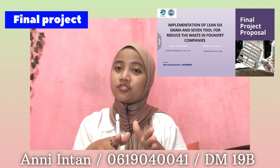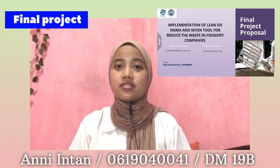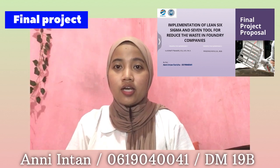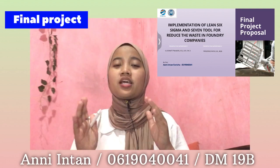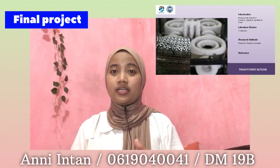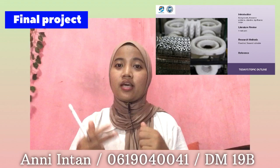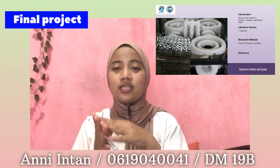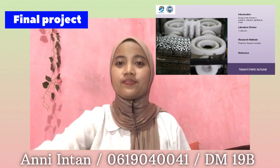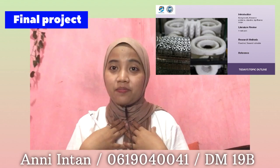The title is: Implementation of Lean Six Sigma and Seven Tools as an Effort to Minimize Waste in Foundry Companies. Today's outline covers chapter 1 through chapter 4: we will discuss introduction, literature review, research methods, references, and an additional chapter 4.